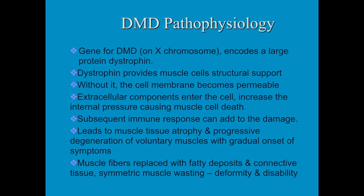The defective gene is on the X-chromosome and what it does is make the protein dystrophin unavailable for use. The purpose of dystrophin is to keep muscles strong — it provides support within the muscle cell itself. Without it, the cell membrane becomes permeable, allowing other things to enter, which completely destroys the cell. Because of the muscle destruction there is an inflammatory and immune response, leading to further damage of the muscle tissue.